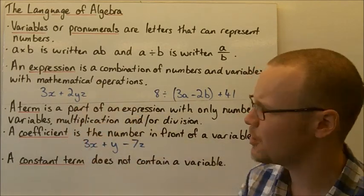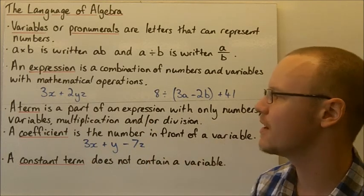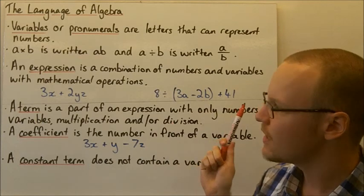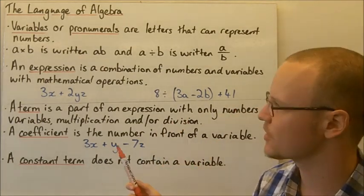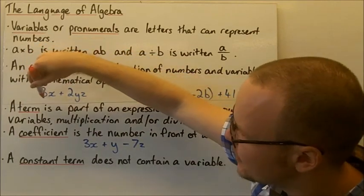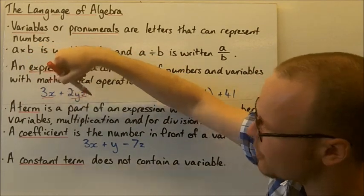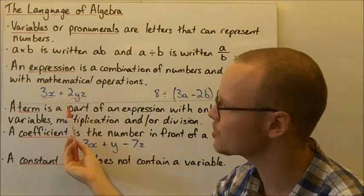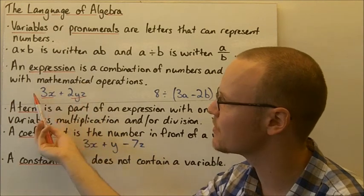Now, a term is part of an expression that only has numbers, variables, and multiplication and/or division — a term cannot have addition or subtraction. So in these two expressions, 3x is a term and 2yz is a term, but the whole expression isn't a single term. 3x is a term as part of this expression, and 2yz is a term as part of the whole expression.